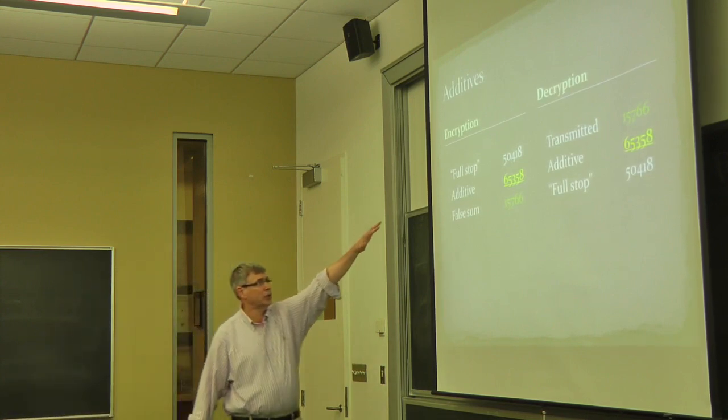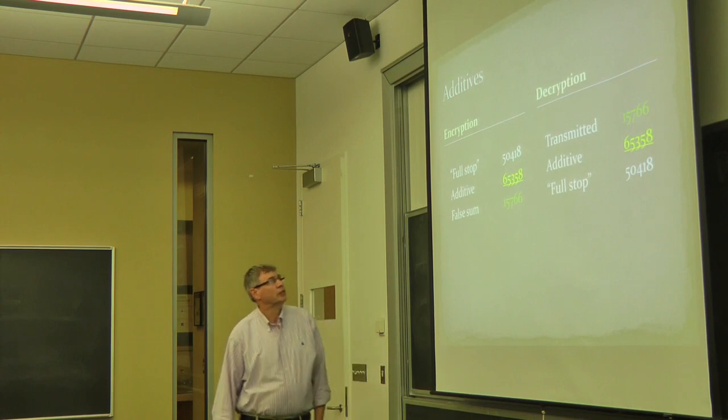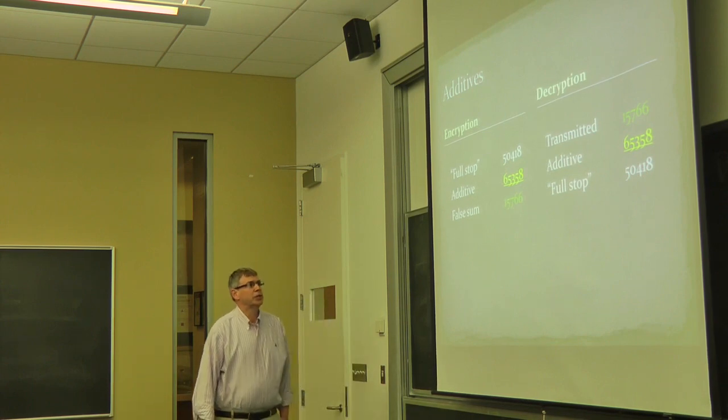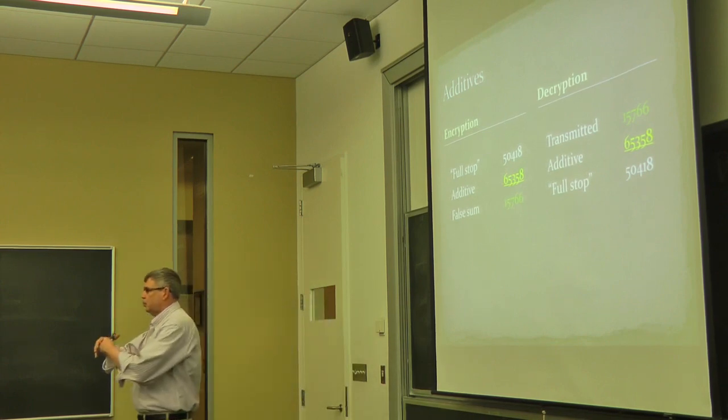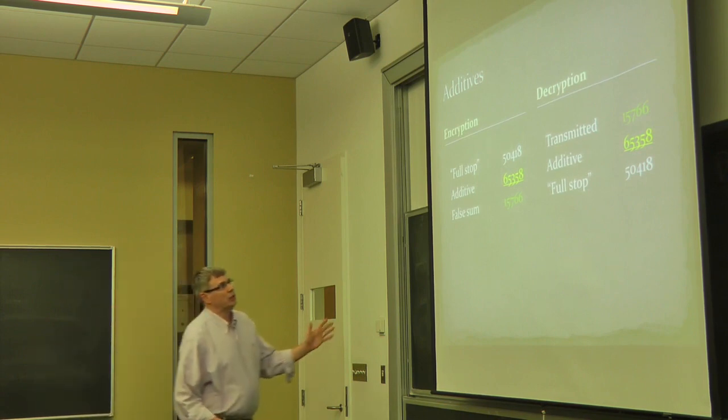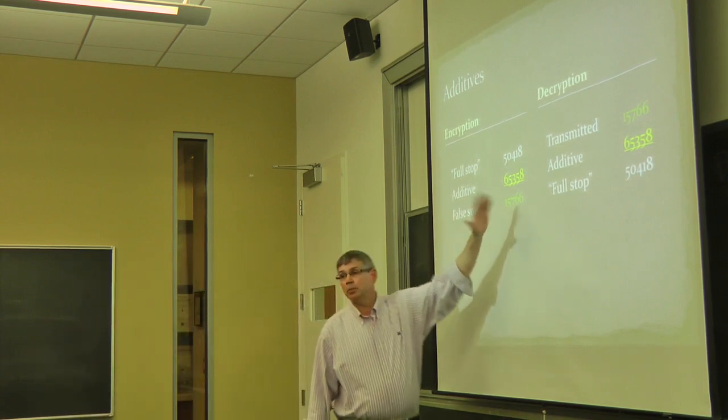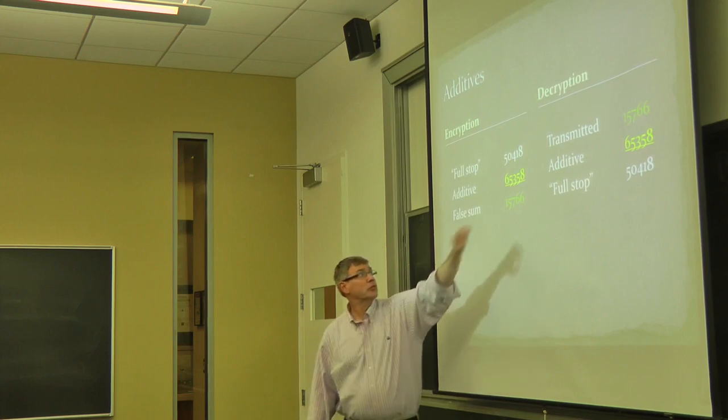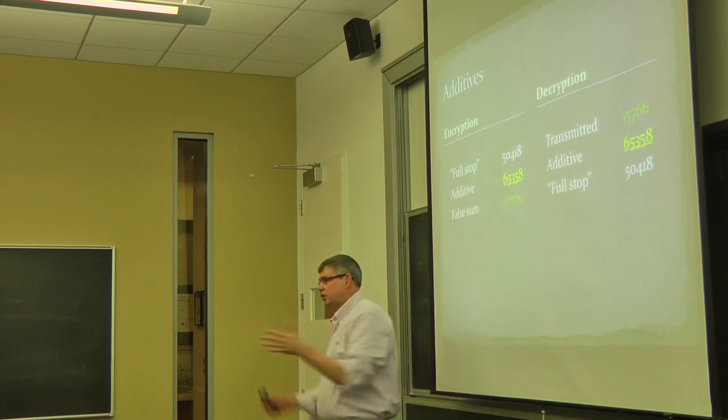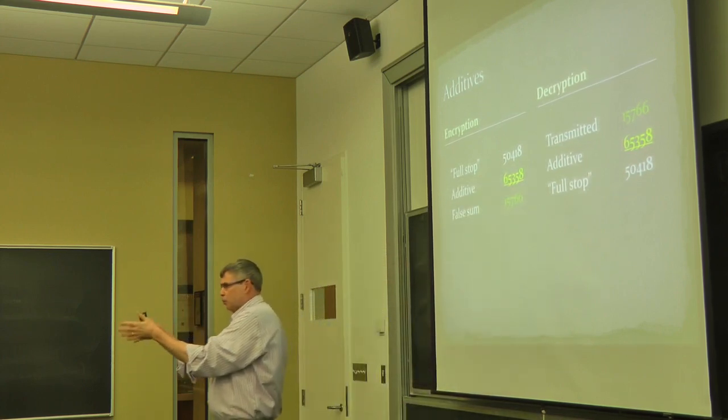So for example, if you take a code group that stands for full stop, this one 50418, what they did was they overlaid it with a random number. And the way the overlaying was done is they added, but they added without carrying. So 8 plus 8 was 6, not 16. You're just adding in columns mod 10.